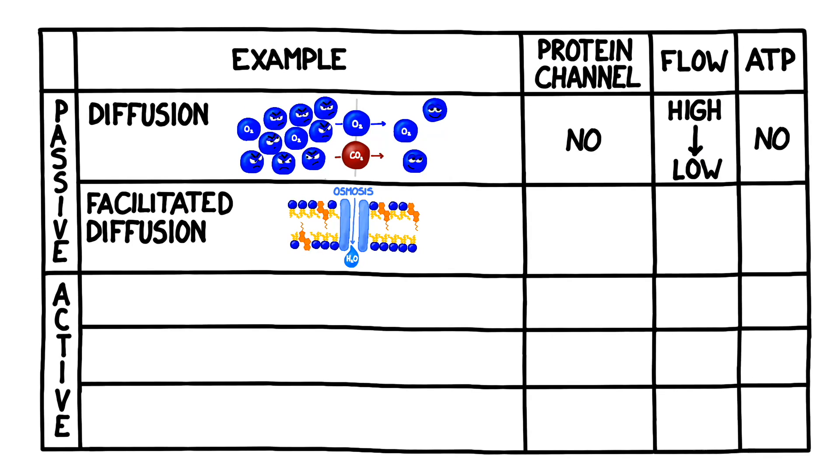To continue with our chart, in facilitated diffusion, particles still flow from high to low concentration. They do use protein channels, but they still don't use ATP. Next, we're going to move into the realm of active transport.